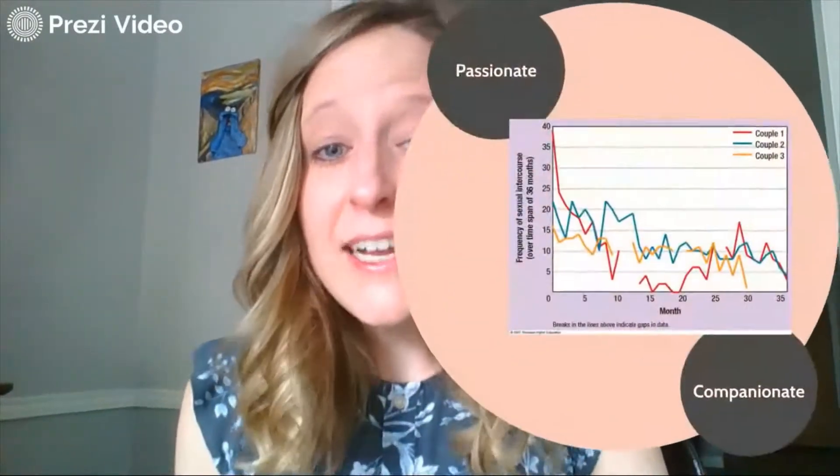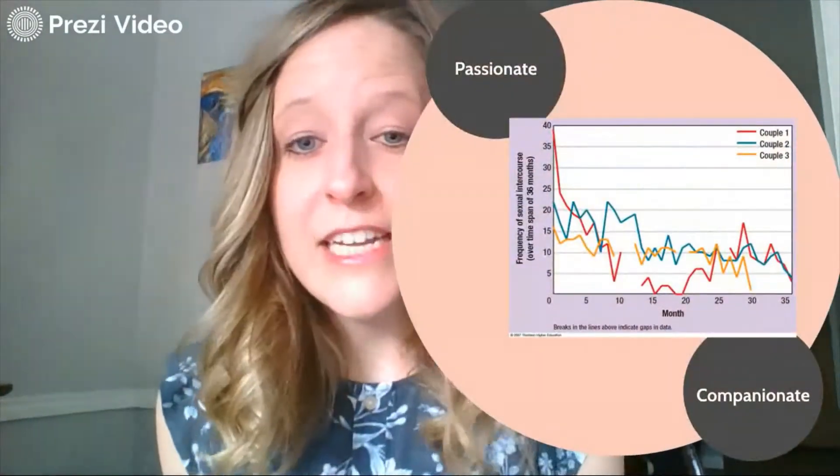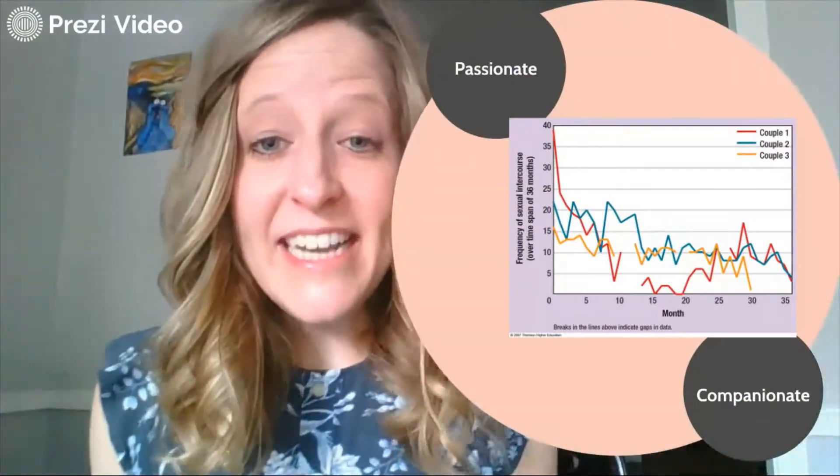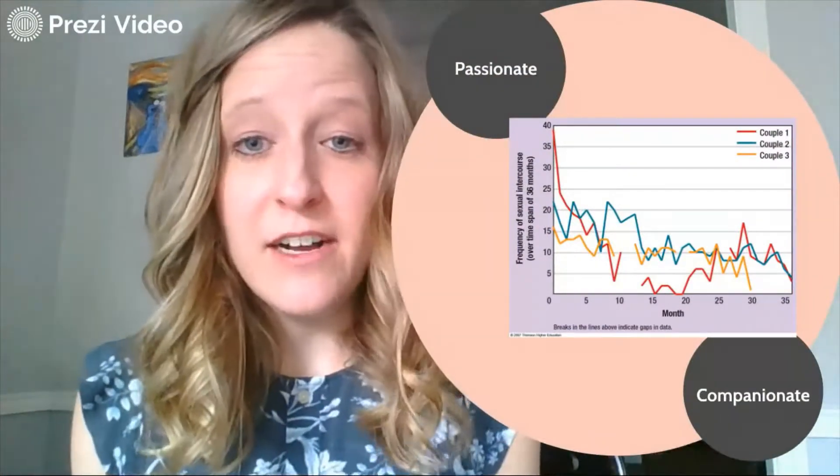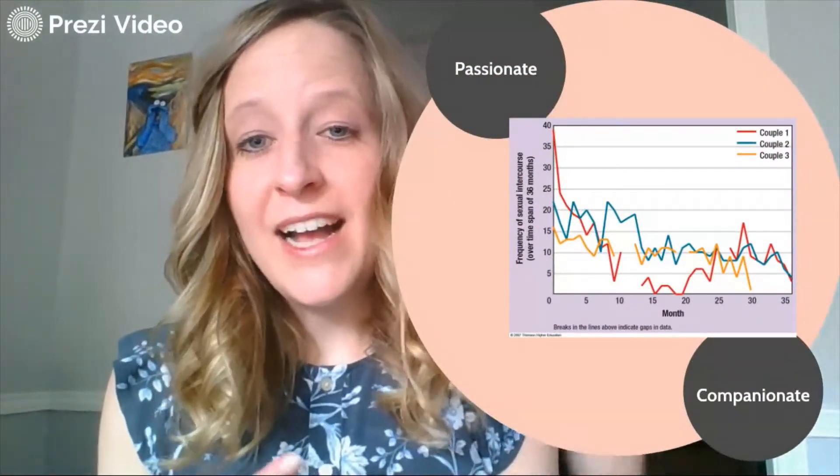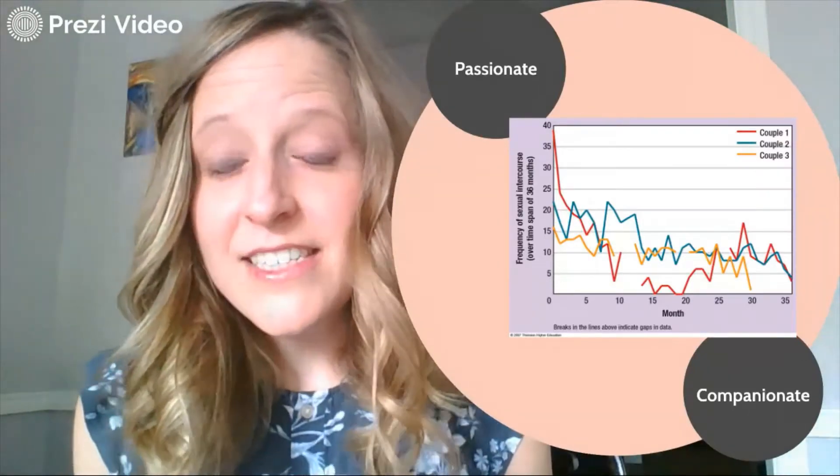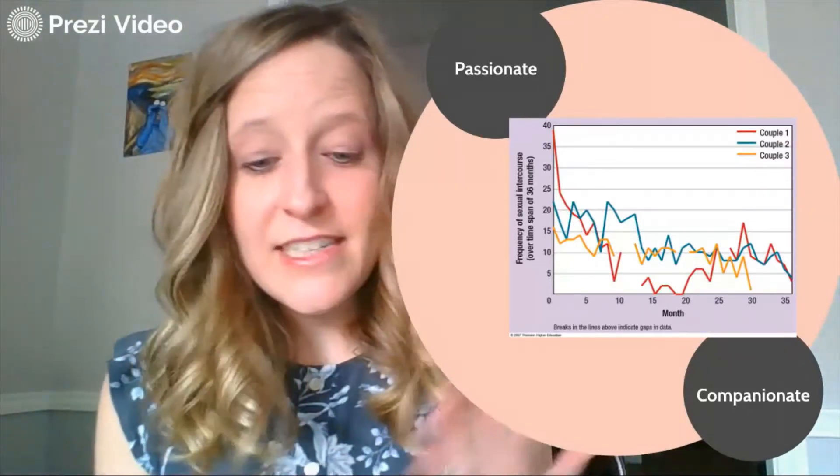Hi, in this course we talk about passionate versus companionate love. There's believed to be a trade-off between the two, and typically relationships follow a predictable pattern, a timeline in which relationships begin with passionate love characterized by intense emotionality and physicality.